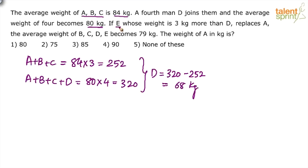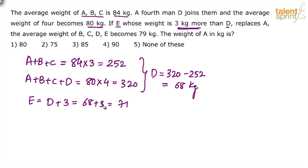E's weight is 3 kg more than D, so E equals D plus 3, which is 68 plus 3, giving 71 kg. Cut down the number of steps — you don't have to write all these individual steps on paper. So the weight of E is 71 kg.